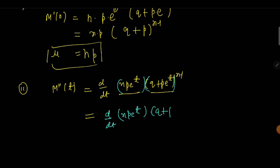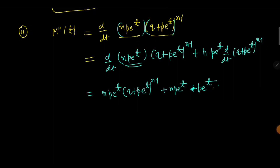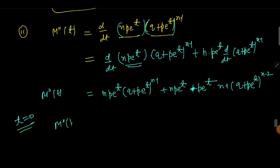Applying the product rule, we get n·p·e^t·(q + p·e^t)^(n−1) plus n·p·e^t times the derivative of (q + p·e^t)^(n−1), which brings down (n−1)·p·e^t. This gives us M''(t). Setting t = 0, we get M''(0) = n·p plus n·p squared times (n−1).